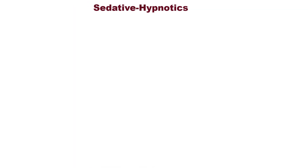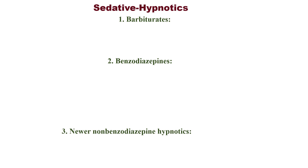Sedative hypnotics. Sedatives are the agents which depress the central nervous system without producing sleep. Hypnotics are the agents which depress the central nervous system with producing sleep resembling natural sleep. It is classified into barbiturates, benzodiazepines, non-benzodiazepine hypnotics, and other CNS depressants.